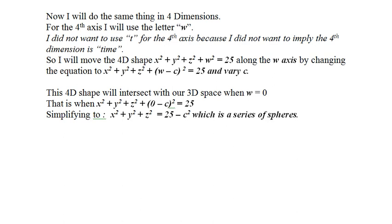This 4D shape will intersect with our 3D space when W equals zero. That is when the equation becomes x² + y² + z² + (0 - c)² = 25. And simplifying, we get x² + y² + z² = 25 - c², which is a series of spheres.